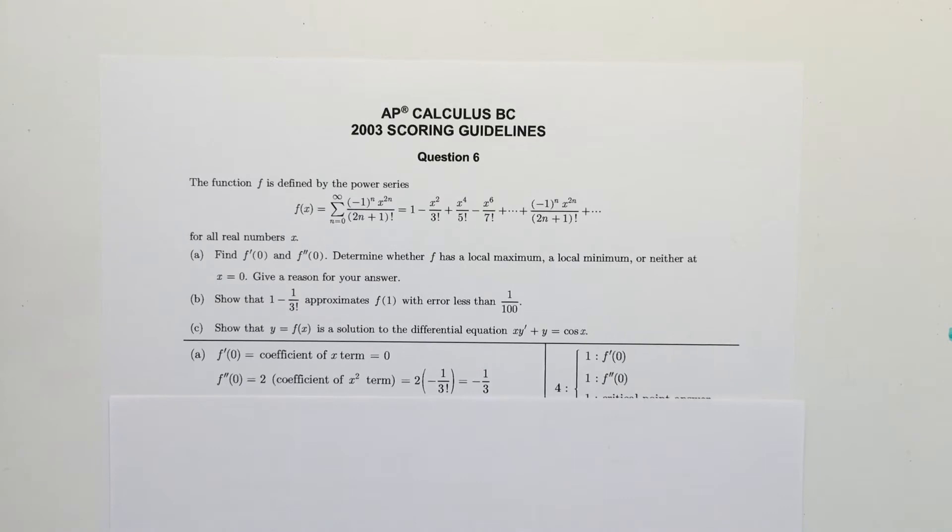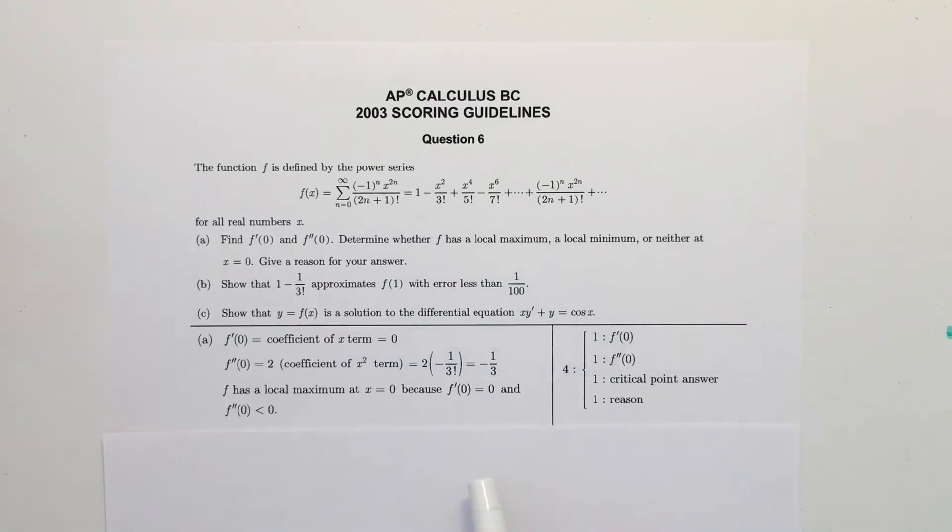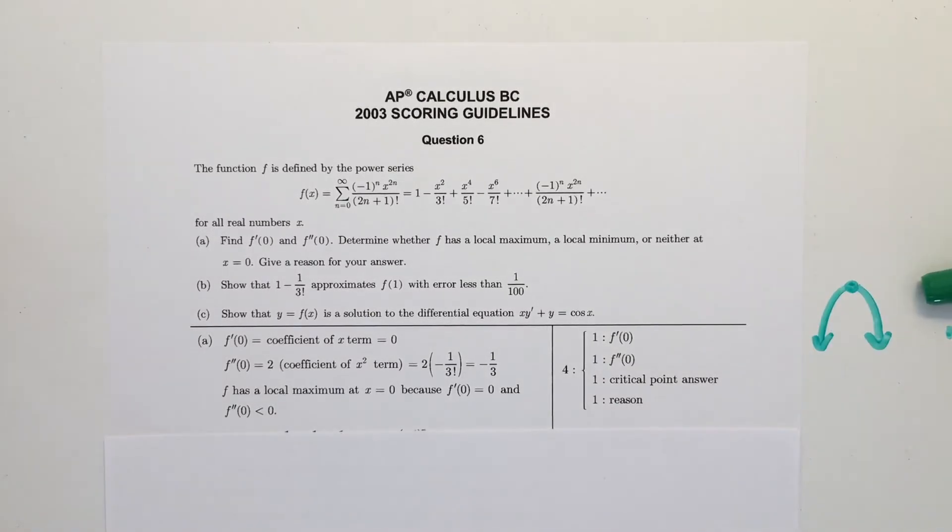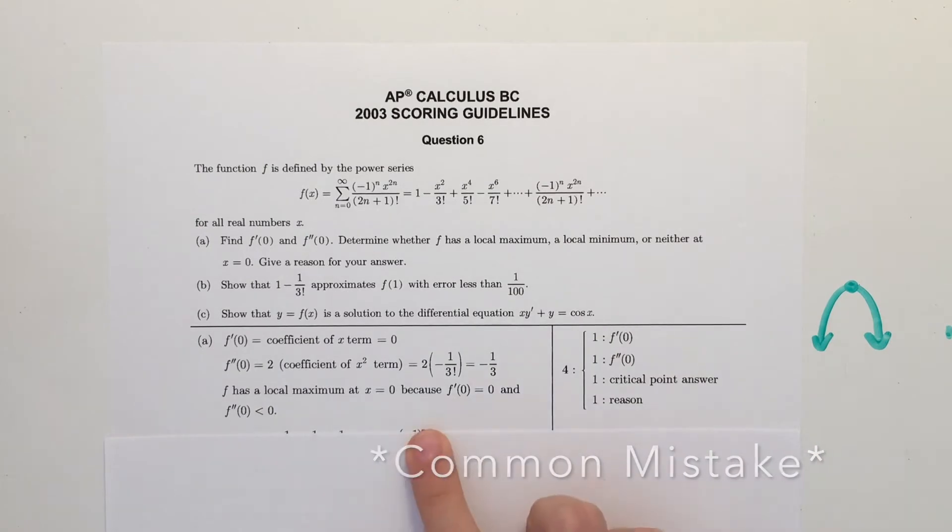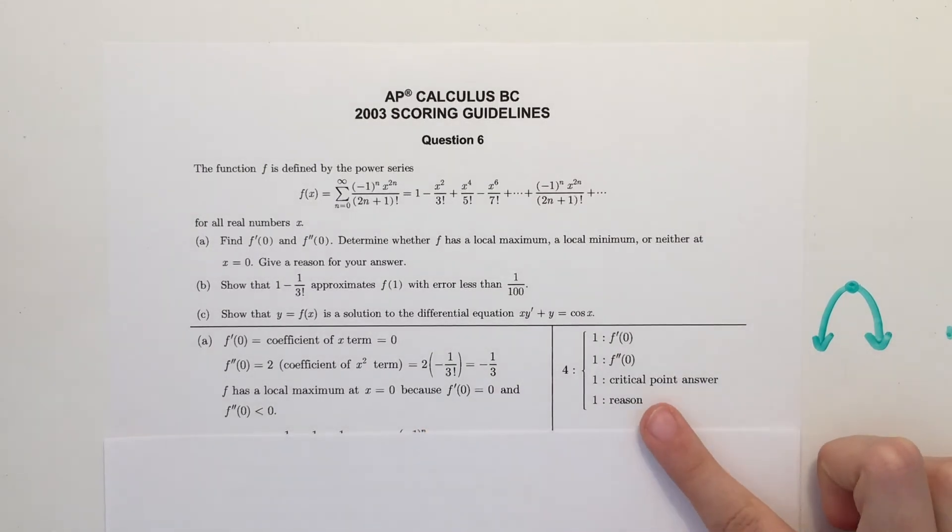The second part of part A asks to determine whether f has a local maximum, local minimum, or neither at x is equal to 0, and to give a reason for your answer. Because the derivative at x equals 0 is equal to 0, and the second derivative at x equals 0 is negative, that means there is a local maximum. The first derivative tells us that we have a horizontal tangent line at x equals 0, and then the second derivative tells us that it is concave down. Therefore, it must have a shape resembling this, so it has a local maximum. Don't forget to put your answer in a sentence, like they showed, as you get a point for the reason.